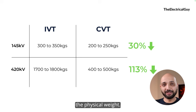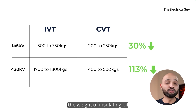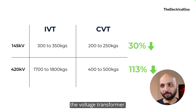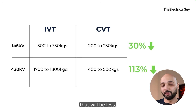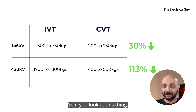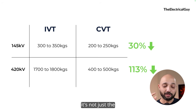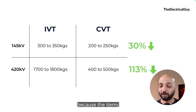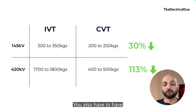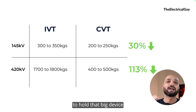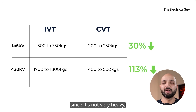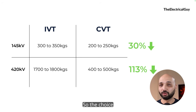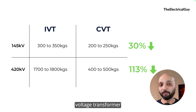This weight difference is not just about the physical weight of the device — it also includes the weight of insulating oil used inside. IVTs need more oil to provide more insulation, whereas CVTs need less. Furthermore, because IVTs are bulkier, you need a stronger support structure to hold them, whereas CVTs, being lighter, can be supported by a regular structure. The choice of support structure also varies based on the type of voltage transformer.